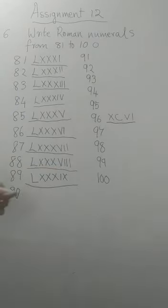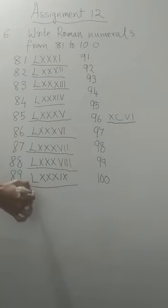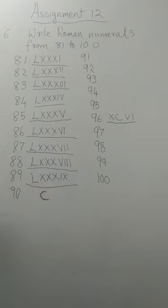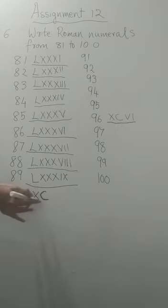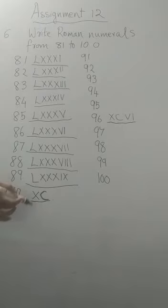And next one is 90. 90. How are you going to write? You will see this. This is 100 in Roman. And if you write 10 in the left side, that means 100 minus 10. So, what is that? 100 minus 10 is 90. So, 90 you write in Roman like this.